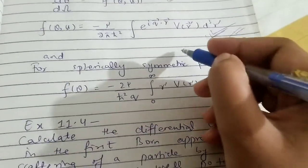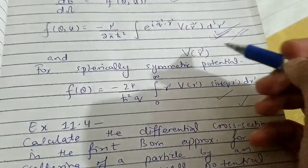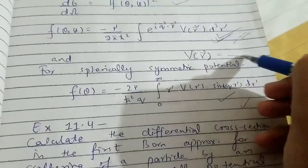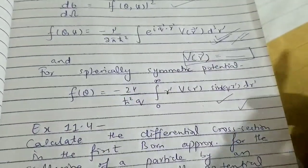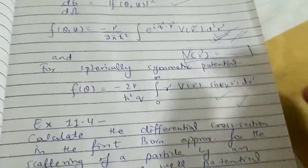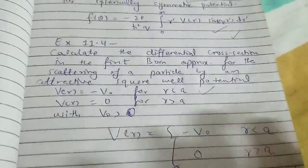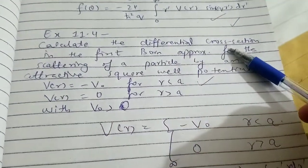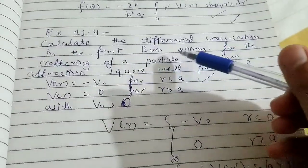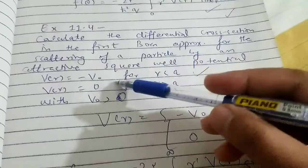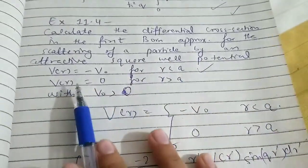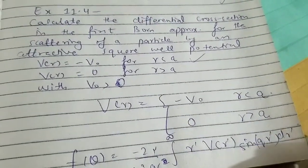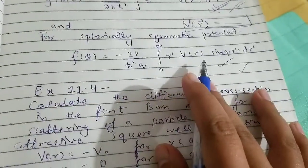You will always see an expression like r-vector in bracket form, which shows that V is a function of r-vector — this clearly indicates the potential is not spherically symmetric, and you must use the general formula. We'll see examples in future videos. Now, Problem 11.4 says: calculate the differential cross-section using the Born first approximation for the scattering of a particle by an attractive square well potential, whose values are given. This potential is spherically symmetric because constant potentials are always spherically symmetric, so we can use the simplified formula.